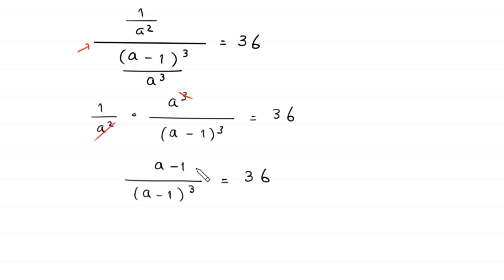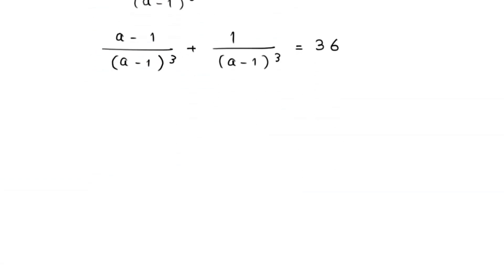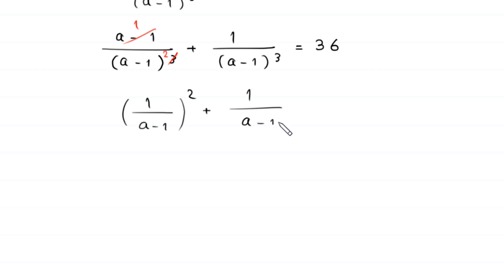In the numerator, we subtract and add 1, taking (a minus 1) as a single term. This can be written as (a minus 1) divided by (a minus 1) cubed plus 1 over (a minus 1) cubed equals 36. Simplifying, the (a minus 1) cancels to give 1 over (a minus 1) squared plus 1 over (a minus 1) cubed equals 36.